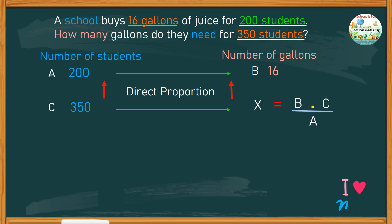Let's see if we can apply this formula to this problem. We are simply looking for the value of X, which is the number of gallons of juice. The first thing we do is divide the 16 gallons among the 200 students to find out how much juice is required per student, and then multiply by 350.